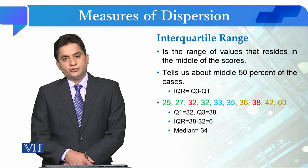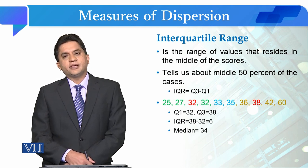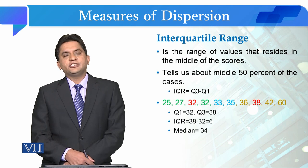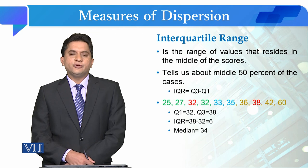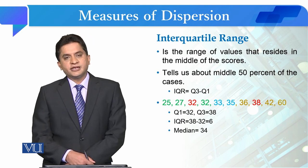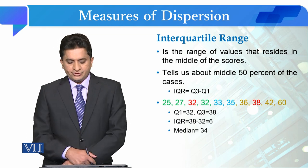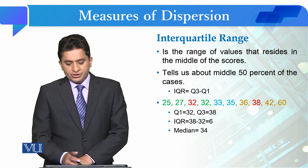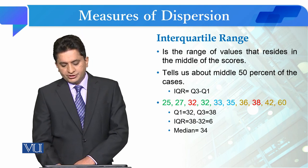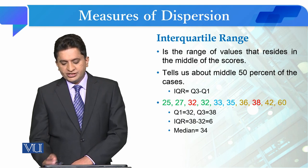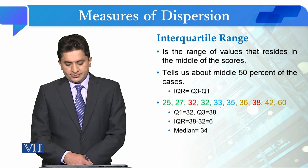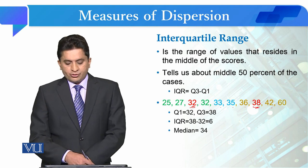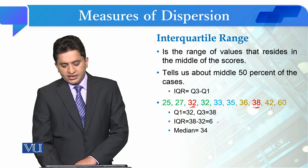The second measure is interquartile range. Interquartile range is the range of values that resides in the middle of the scores. You know from basic statistics that when we see any variable, it has four quarters: Q1, Q2, Q3, and Q4. Interquartile range is actually Q3 minus Q1. It is basically the centered 50% of the data. If I give you an example with these scores: 25, 27, 32, 32, 33, 35, 36, 38, 42, and 60. The Q1 value is 32 and the Q3 value is 38, so our interquartile range is 38 minus 32, which is 6.